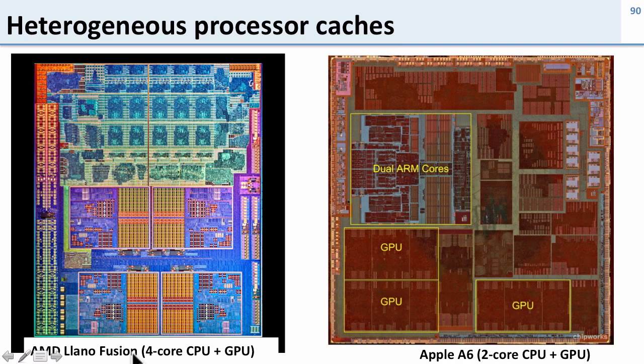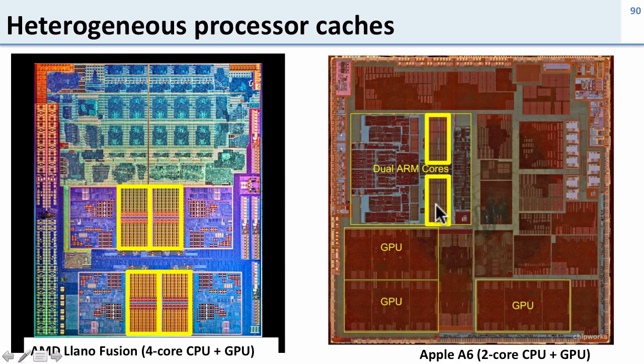Here's AMD's Fusion. This is a four core CPU down here at the bottom, plus a GPU on the same chip. And we see again we have these shared caches here. And here's Apple's A6, which has its shared caches here as well.